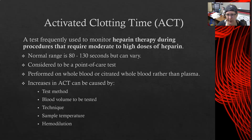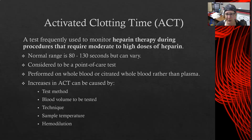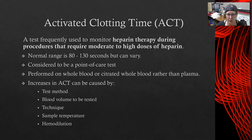The normal range for the activated clotting time is 80 to 130 seconds, but it can vary by analyzer. It is usually performed on a point-of-care analyzer at the bedside, on whole blood rather than plasma, because it checks the clotting ability of the blood and requires red cells and platelets. An increase in the activated clotting time can be caused by the test method, blood volume, collection and testing technique, sample temperature, and hemodilution — such as when blood is diluted by fluids given during a procedure.